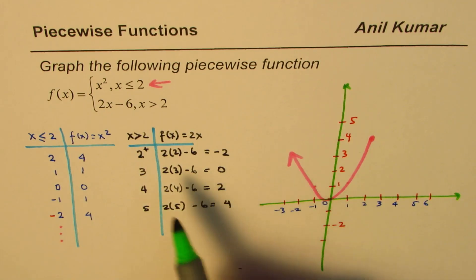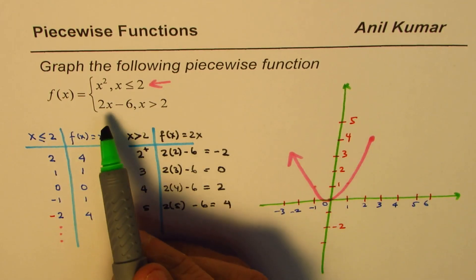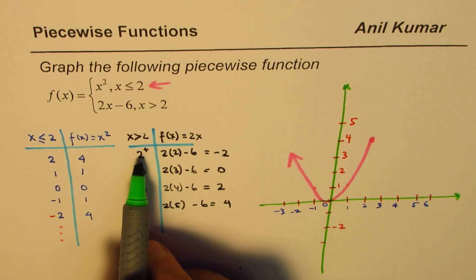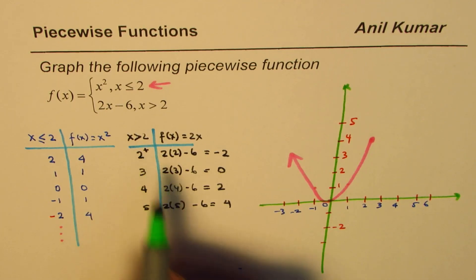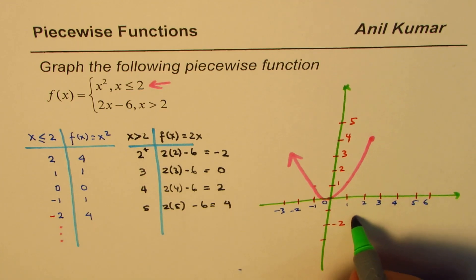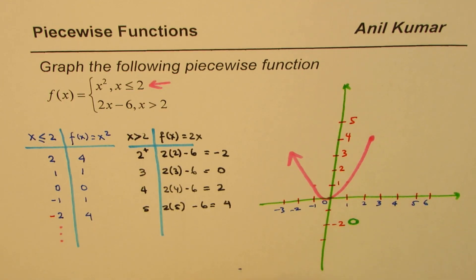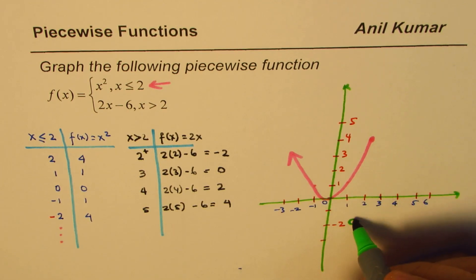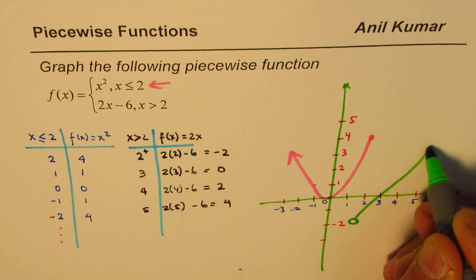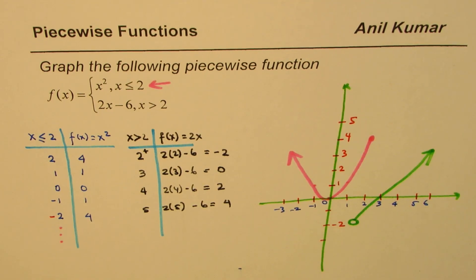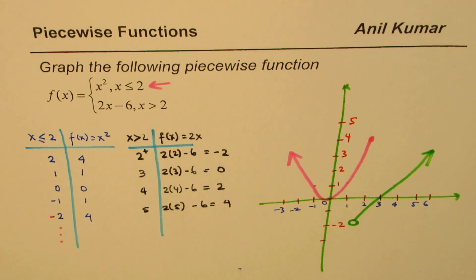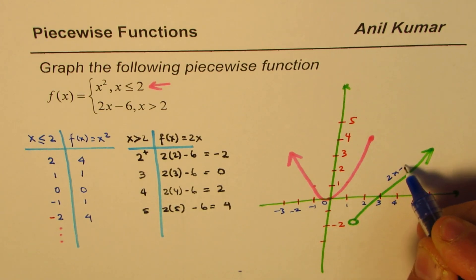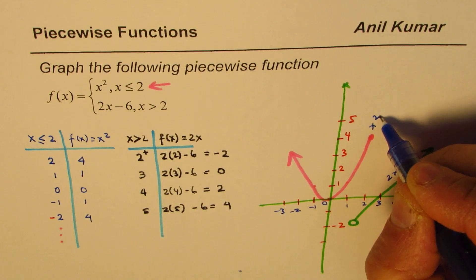The other part of the graph is a straight line, 2x minus 6. At slightly more than 2 — meaning x equals 2 is not included — we draw an open circle. At x equals 2, the line would give minus 2, so the open circle is at (2, minus 2). At x equals 3, it is 0. It's a straight line, so we connect these points.